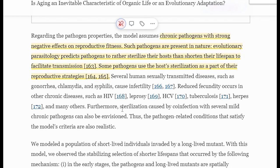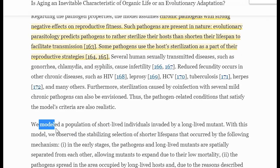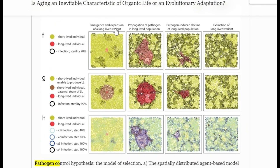So using this hypothesis then, and Hamilton's rule, you can make some predictions about what we might observe in nature. For example, where kin interactions are more frequent, and pathogens spread more quickly, you'd expect aging to be faster in that species to prevent the spread.